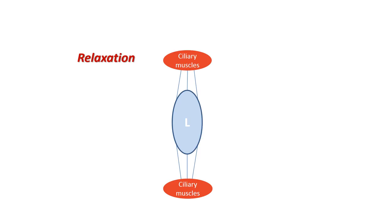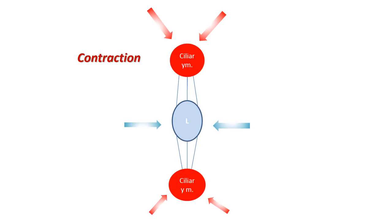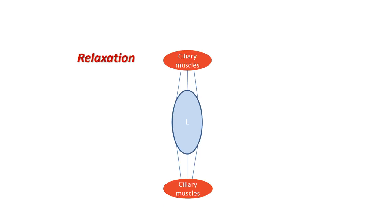Accommodation happens through the ciliary muscles attached to the lens. When the ciliary muscle is contracting, the lens becomes more convex, improving the focus for closer objects. When it relaxes, it flattens the lens, generally improving the focus for farther objects.